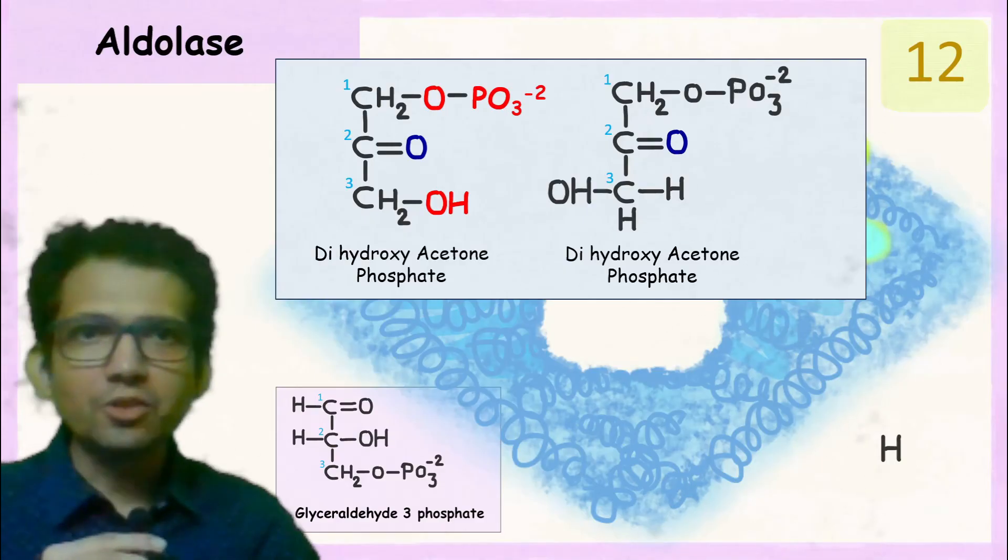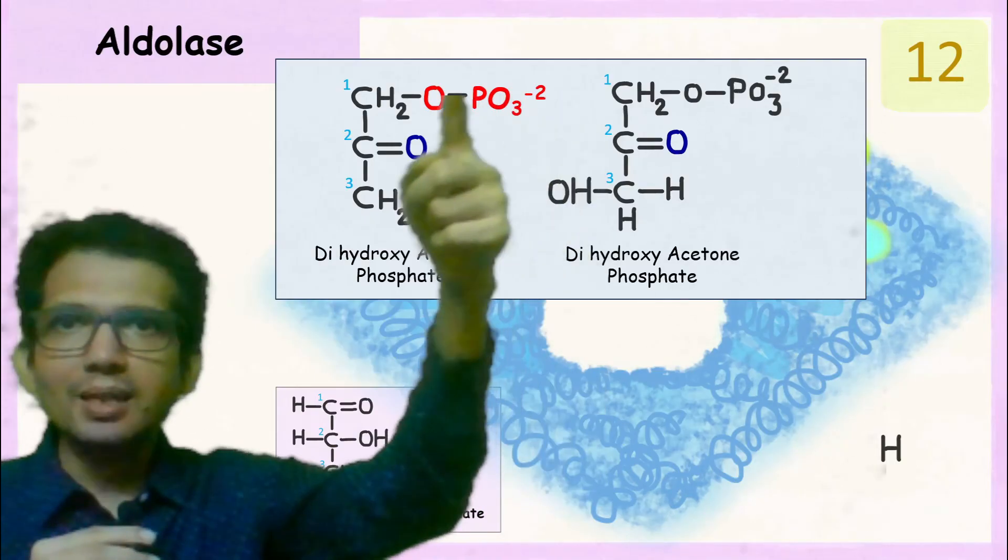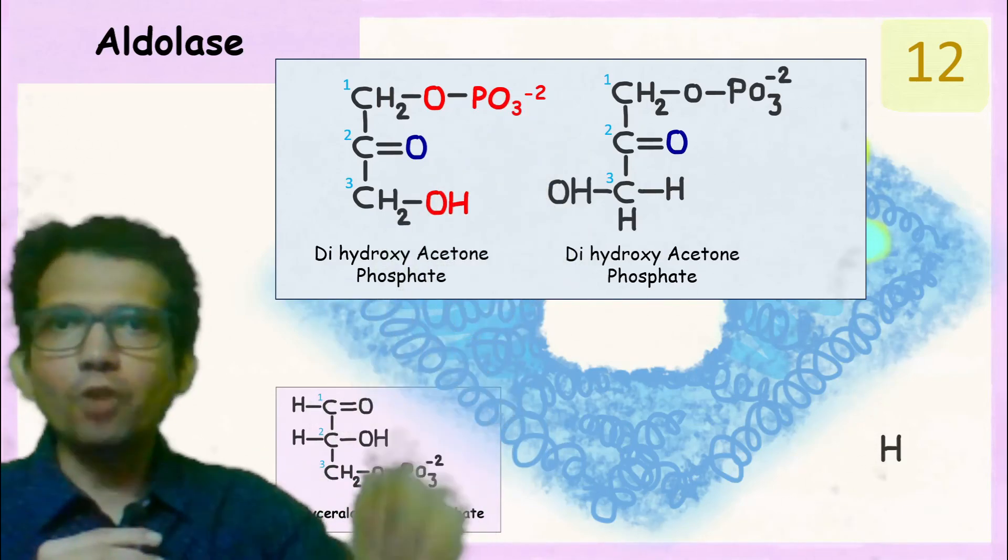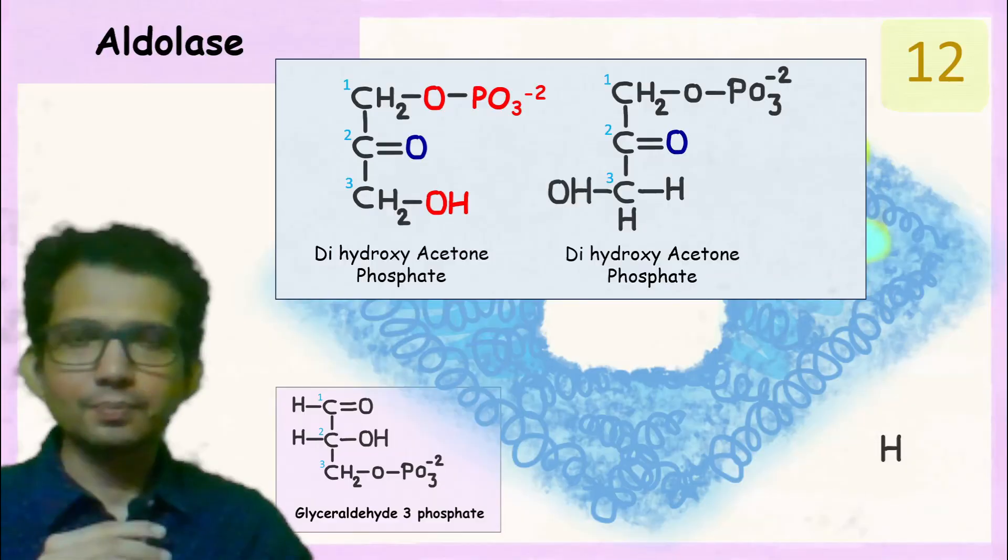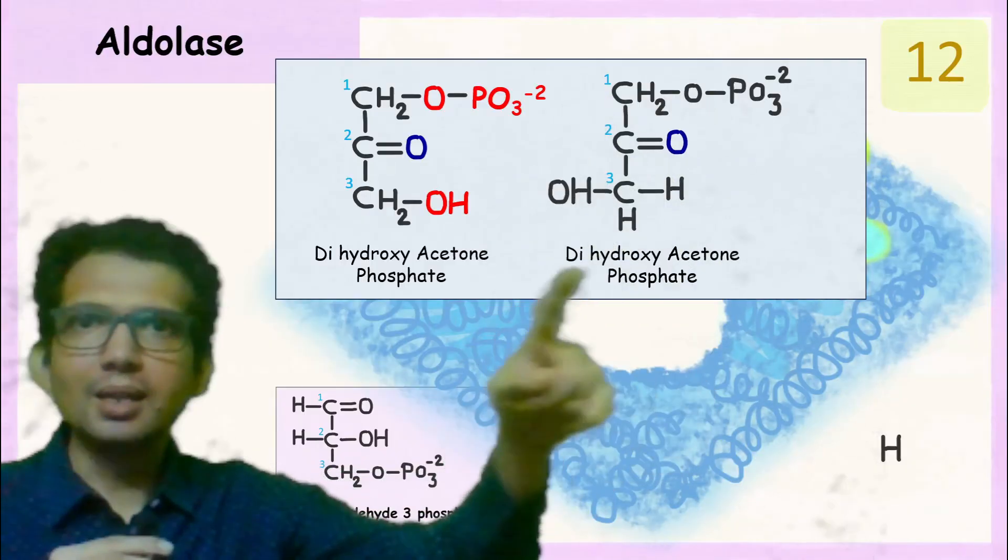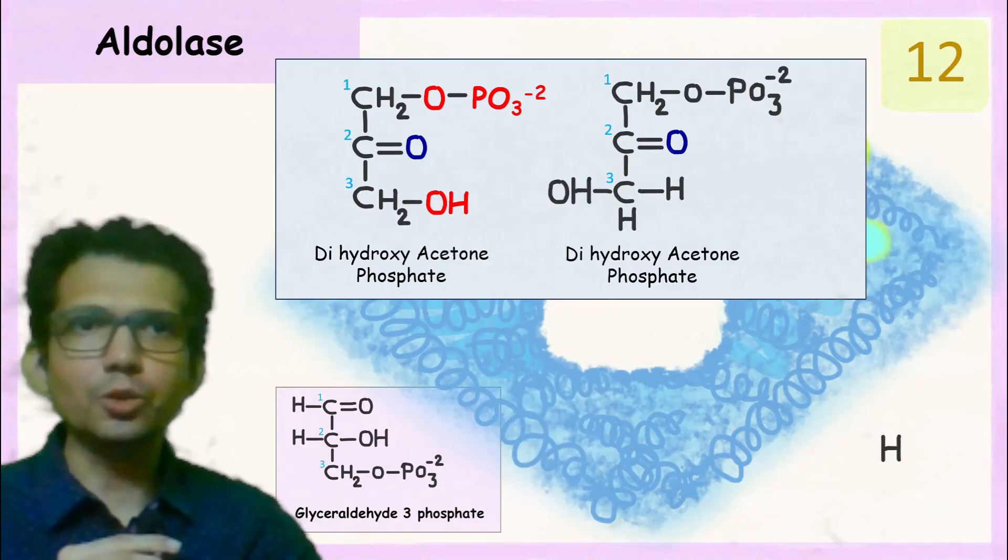And if you attach phosphate group to this, then it becomes dihydroxyacetone phosphate. So the final product so formed is dihydroxyacetone phosphate.